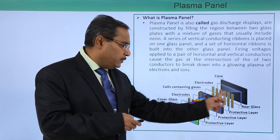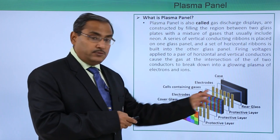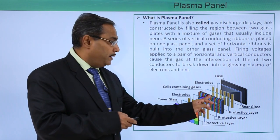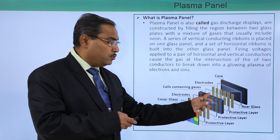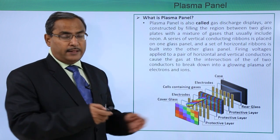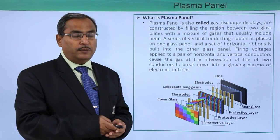Now what will happen in between these two electrodes when the voltage difference is created, this particular gas will be broken down into glowing plasma containing electrons and ions and that will generate the actual display of the image.